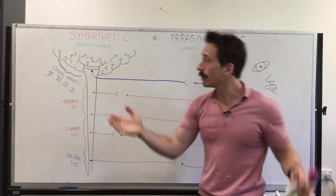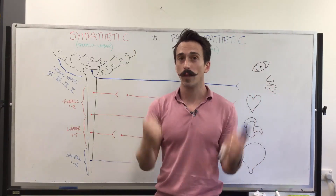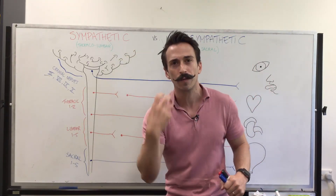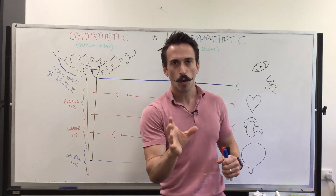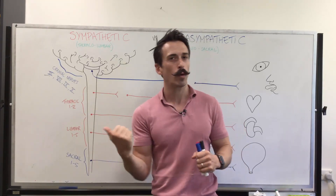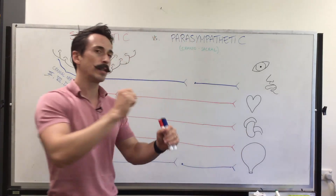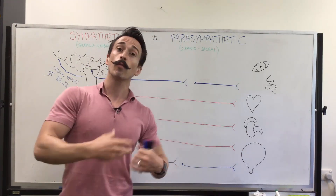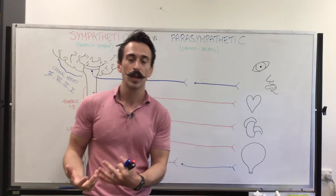The sympathetic nervous system is also known as the fight-or-flight system. It gets activated in times of fear so that you can maintain homeostasis when you're either fighting or needing to run away to fight another day. The parasympathetic nervous system gets activated in times of rest and relaxation to maintain homeostasis.